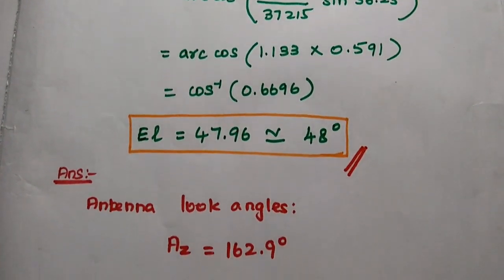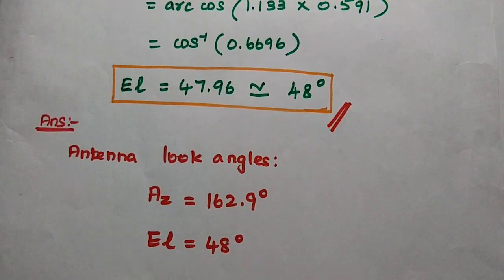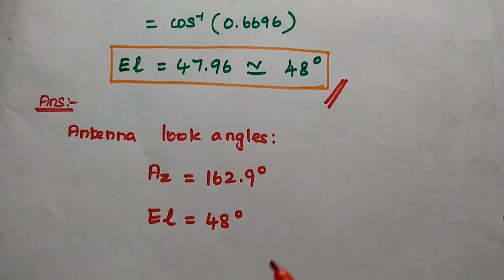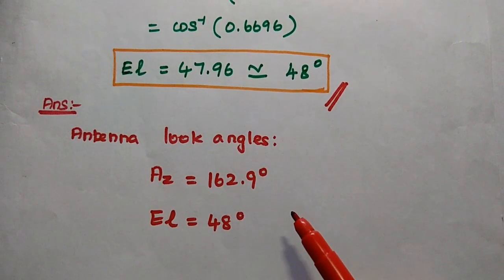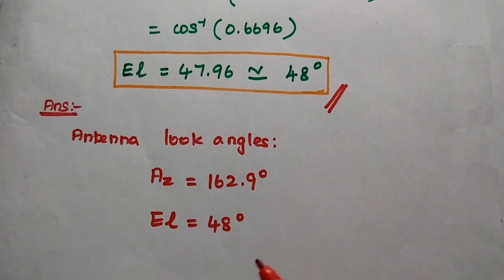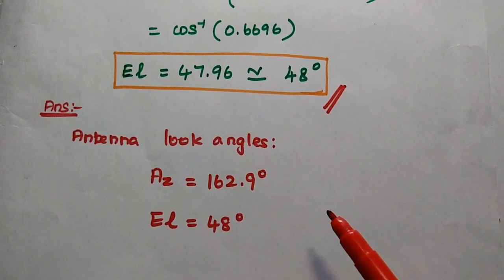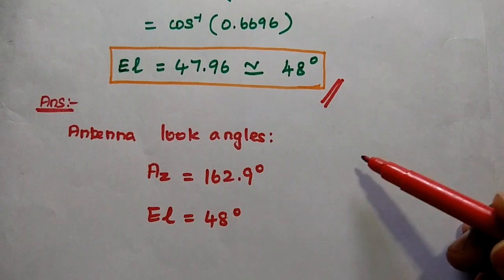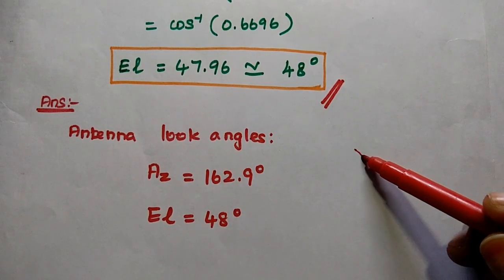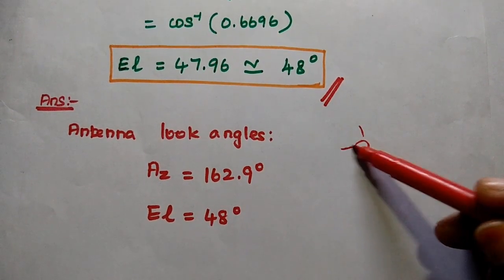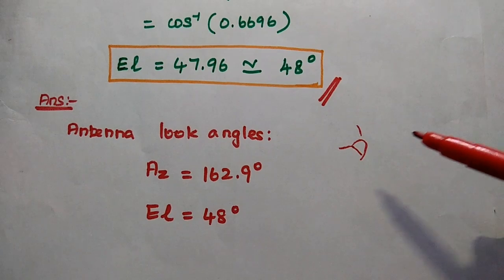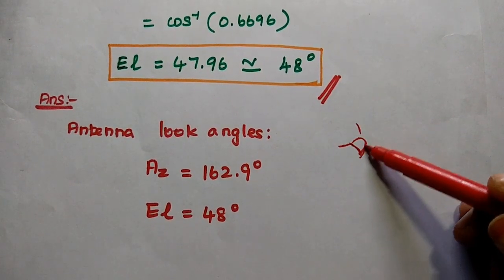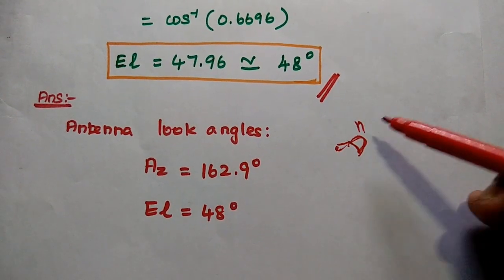Finally, the look angles for the given earth station antenna are: azimuth angle equals 162.9° and elevation angle equals 48°. Whenever you use your calculator, make sure the mode of operation is set to degree mode to correctly calculate arccos or arcsin values.